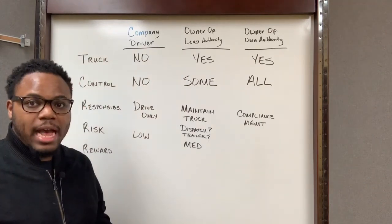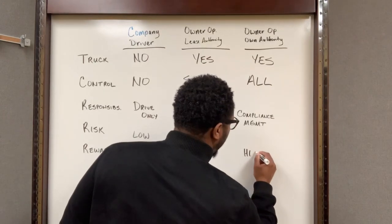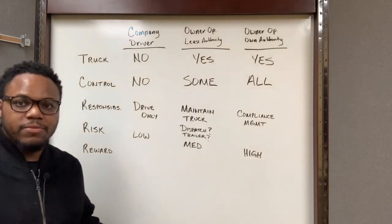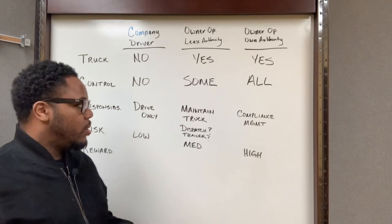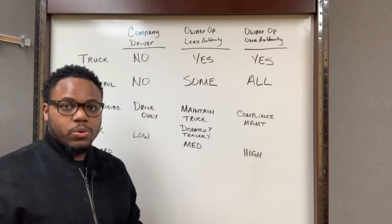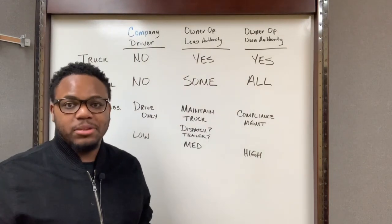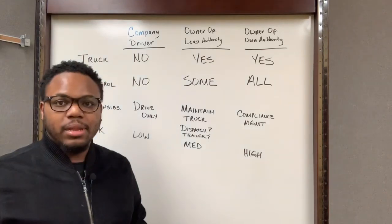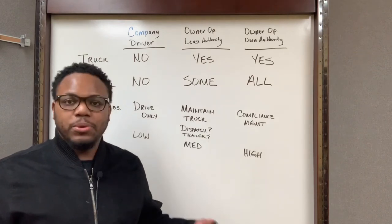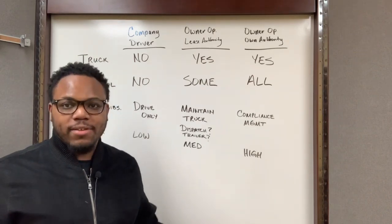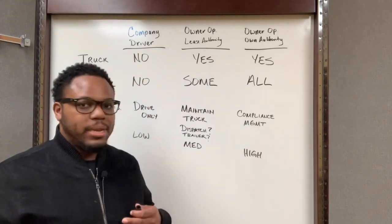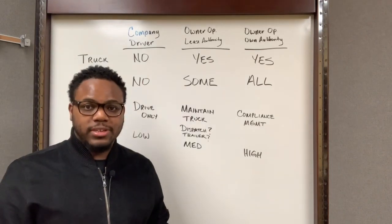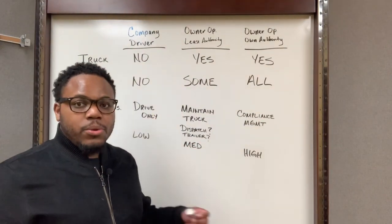The risk as an owner-operator with their own authority is pretty high. Why? Because of the responsibilities we just mentioned — there are a lot more things you have to do. With that compliance piece, it's big. If you were to get shut down, your entire business could be shut down by the DOT if you're not complying. There's a lot of risk. If you were to get into an accident, not only does it affect your driver's license, but it also affects your company's safety score. Anytime you go through a DOT inspection and get put out of service, that also affects your safety score. So there's a lot more risk as an owner-operator with their own authority.